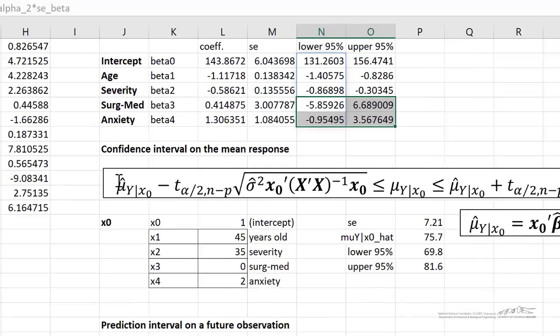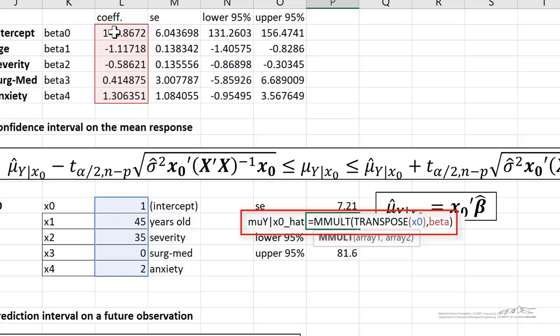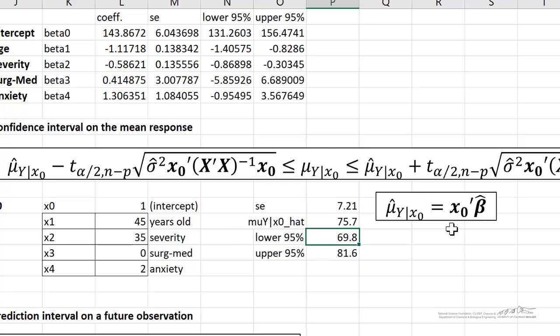To compute a confidence interval on the mean response, we have this big old mess of an equation. We have our input vector. We have to evaluate this at a particular combination of our inputs. I have an x0 here. Remember, we have to include an intercept term. And the coefficient of the intercept is just 1. And I'm just evaluating this at 45 for x1, 35 for x2, 0 for that categorical regressor for x3, and 2 for our anxiety. I've named this x0. I've just used our standard error that the regression outputs. We can evaluate the average at y by just taking the transpose of x0 and multiplying it by beta hat. So that's just this equation right here.